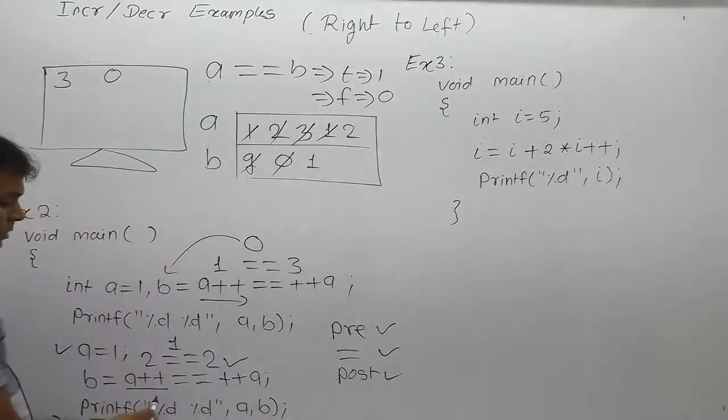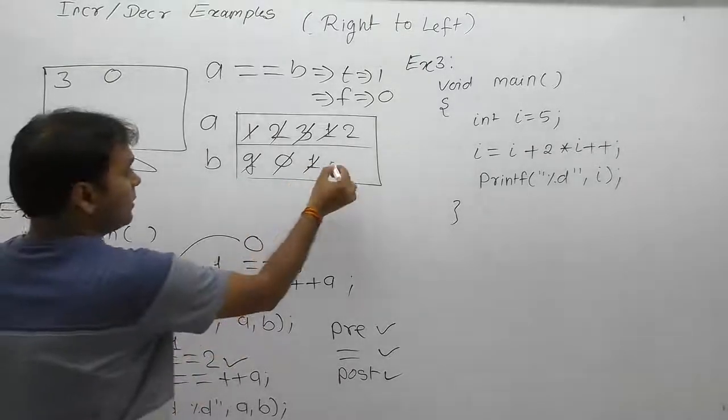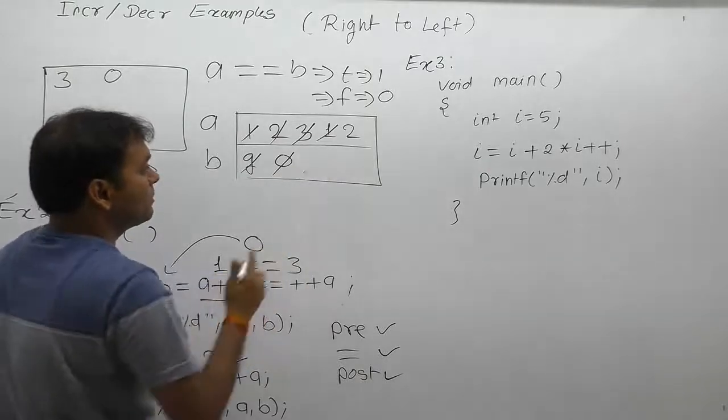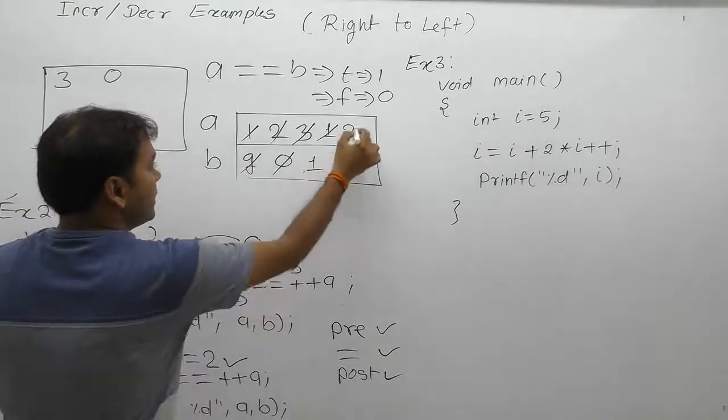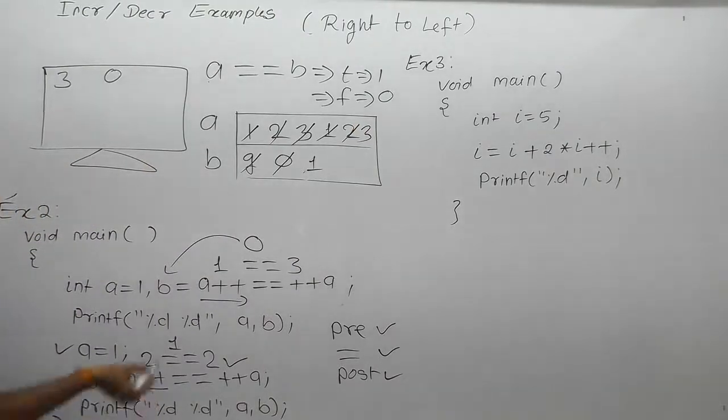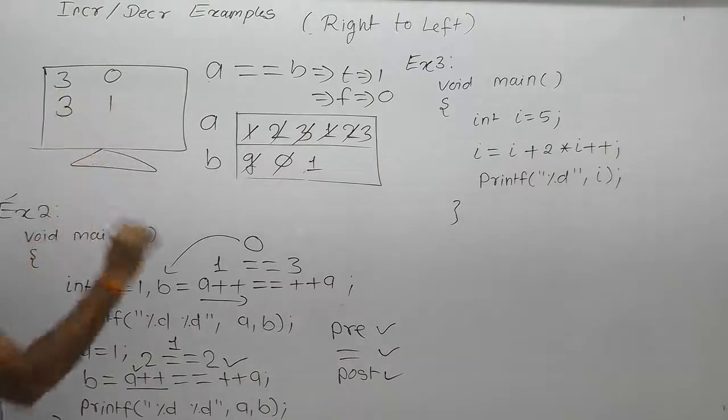After that, finally post operation. Post step for a, now a becomes again, post is applied for a. Now a becomes three. Final result of a and b is three and one. Now displayed value of a and b is three and one. That's all.